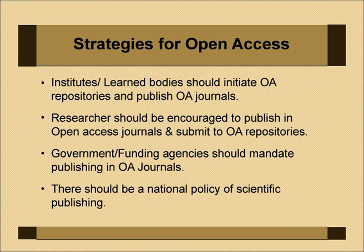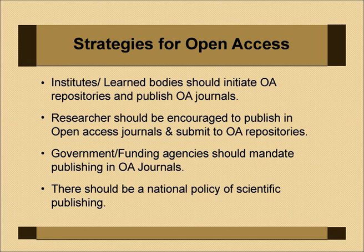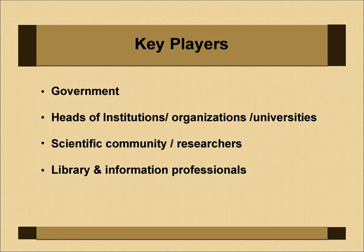What are the strategies for open access? Institutes and learned bodies should initiate open access repositories and publish open access journals. Researchers should be encouraged to publish in open access journals and submit to repositories. Government and funding agencies should mandate publishing in open access journals — for example, the European Commission mandates that publications from funded projects be made available in open access. There should be a national policy for scientific publishing. Key players are government, heads of institutions, the scientific and research community, and library and information professionals.